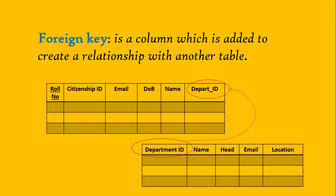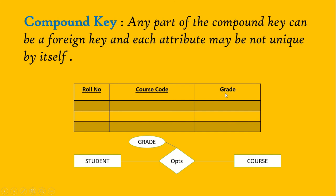Next is foreign key. For example, in the student table, a student has a department. Instead of storing only the department name, we can connect the student to their department using a department ID, which is the primary key of the department table where all other department details are stored. When the primary key of one table is used as an attribute in another table, it is called a foreign key.